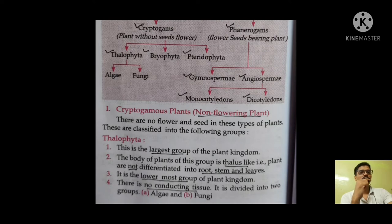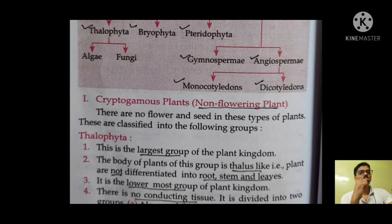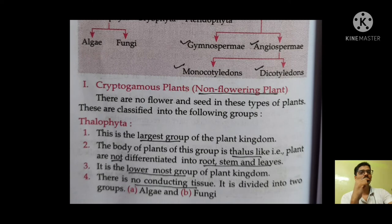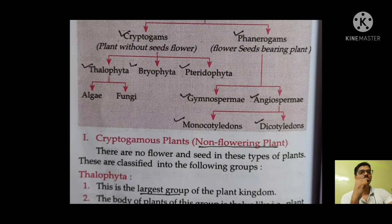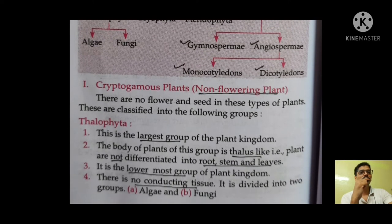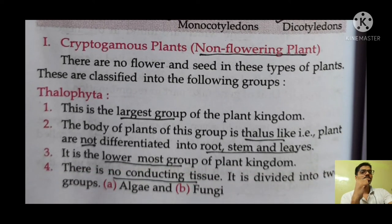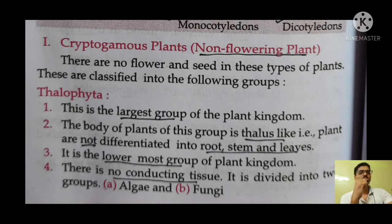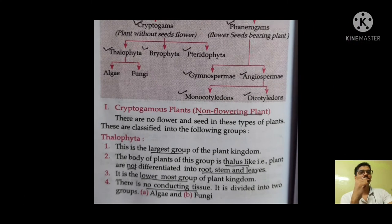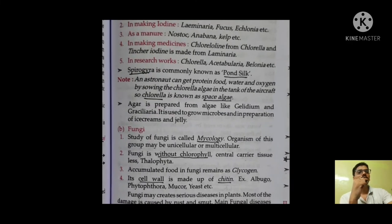Cryptogamous plants are non-flowering plants. They are further divided into thallophyta, bryophyta, and pteridophyta. Thallophyta is the largest group of the plant kingdom and plants of this group are thallus-like — meaning they are not differentiated into root, stem, and leaves. It is the lowermost group of the plant kingdom. There is no conducting tissue in thallophyta, and it is divided into two: algae and fungi.